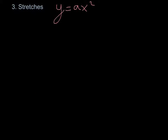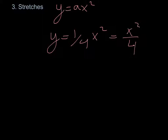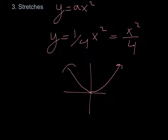If a is less than 1 — a fraction — you make the parabola wider. For example, y equals (1/4)x squared: plugging in x=2 gives 4/4=1, so you go up only 1 instead of 4, making it wider. On a quiz where you match equations to graphs, a coefficient less than 1 means a wider graph, greater than 1 means a narrower graph. Remember the shifts too, and those rules should cover it.